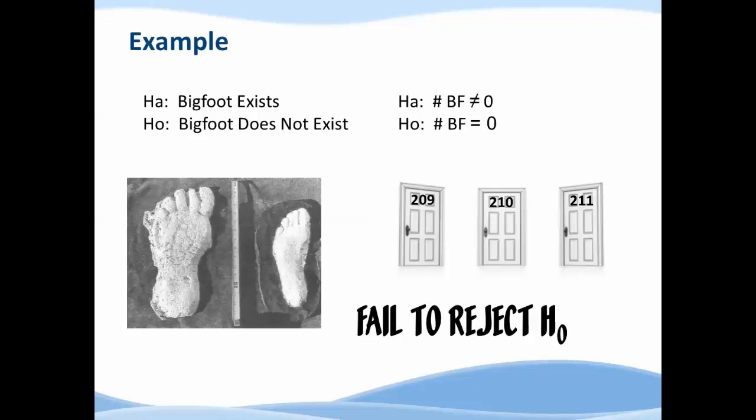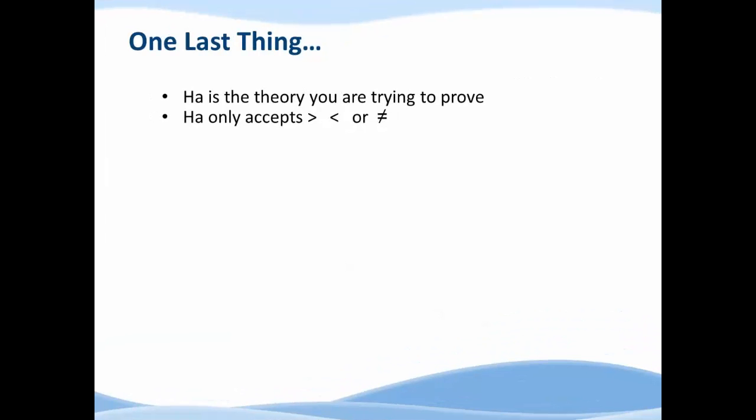There's one last thing to take a look at with these hypotheses. We've taught you rule one: the alternate is the theory or the assumption you're trying to prove. And rule two: it only accepts the math symbols greater than, less than, or not equal. So there's a dilemma for green belts. What if someone tells you to please test Ford versus Chevy to see if they're the same? In other words, test to see that Ford equals Chevy. Well we've just told you rule one: the theory that you're trying to prove is your alternate, Ford equals Chevy. But rule two tells us that we cannot use an equal sign in an alternate hypothesis.